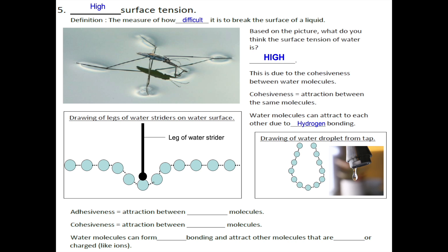If the connection between the same molecules is known as cohesiveness, the attraction between two different molecules is known as adhesiveness. We know that water molecules can form hydrogen bonding, and hence can attract other molecules that are also polar or charged, like ions.